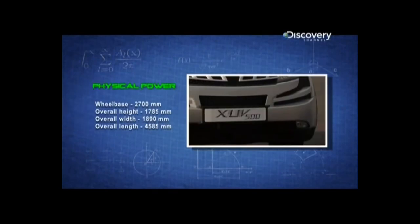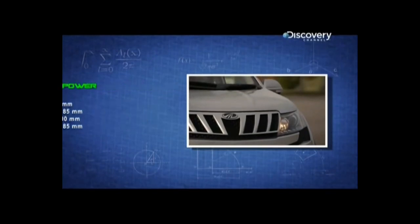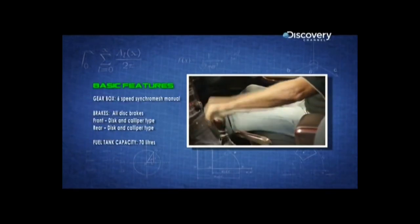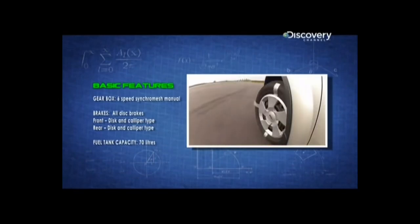The car has a broad wheelbase of 2700 mm and stands at 1785 mm in height. With a 6-speed gearbox, disc brakes, independent suspension, and a 70-litre fuel tank.